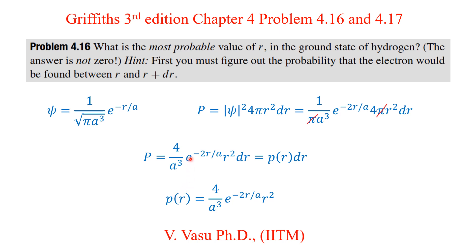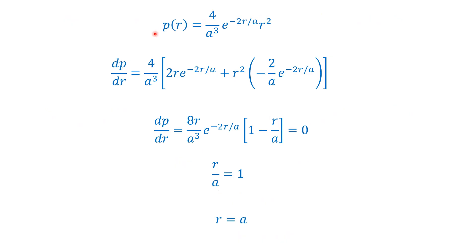After canceling the dr terms, P(r) becomes 4 over a cubed times e to the power minus 2r over a times r squared. The factor of 2 in the exponent comes from taking the modulus squared of e to the minus r over a. So we have derived the radial probability density P(r) equals (4/a³) e^(−2r/a) r².